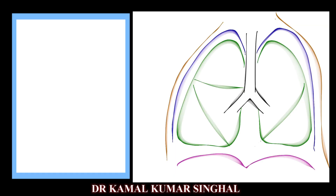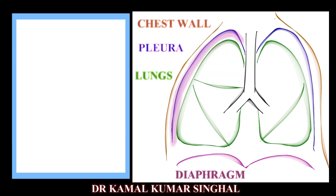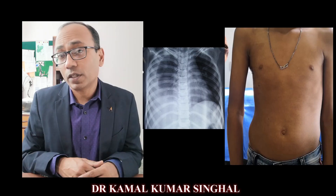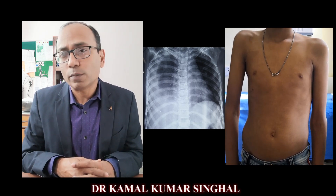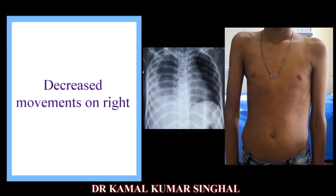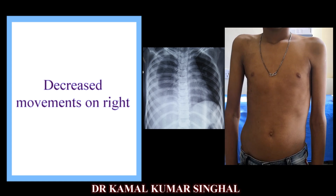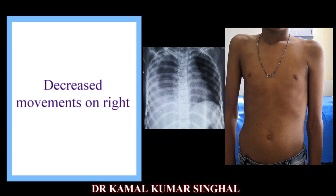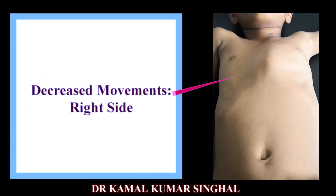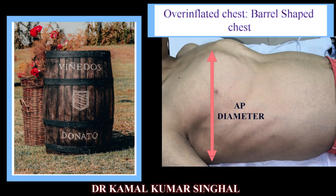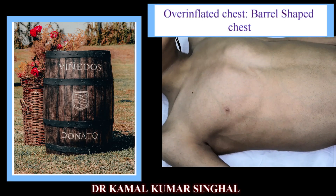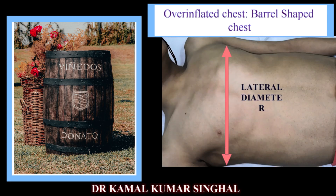The chest movements may be affected on one side due to abnormalities in the lungs, pleura, chest wall, or diaphragm, resulting in asymmetric breathing movements. Compare the chest movements on both sides. The side with lesser or decreased movements is more likely to have an abnormality. An increased anterior-posterior diameter of the chest in comparison to the side-to-side measurement suggests a hyperinflated state.